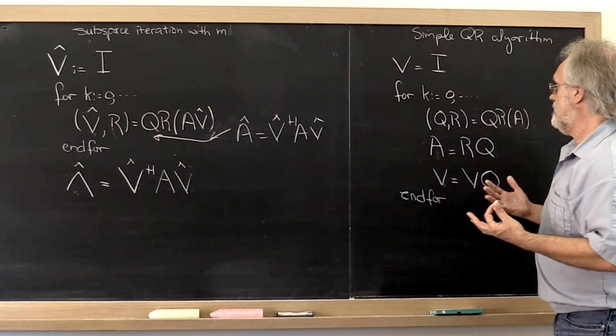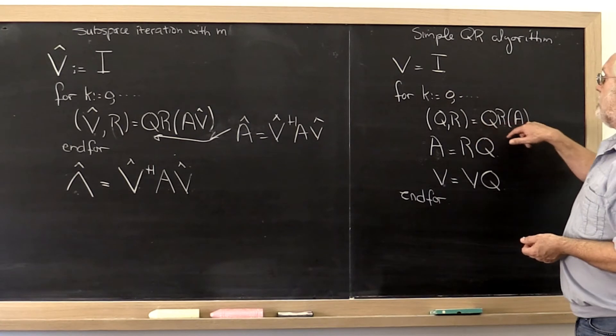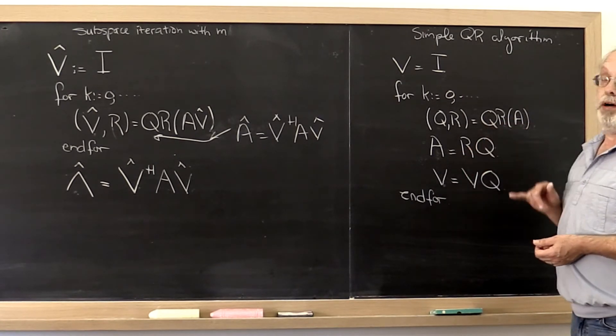But this is surprisingly simple. Compute the QR factorization of A multiply Q by R.